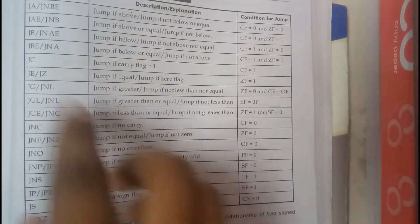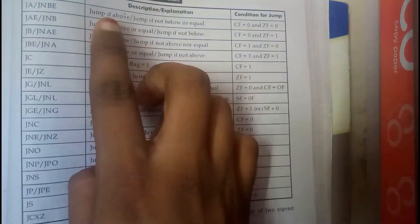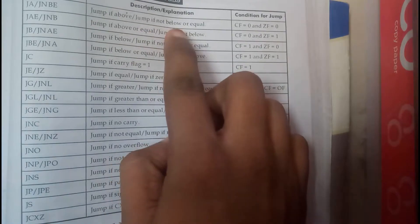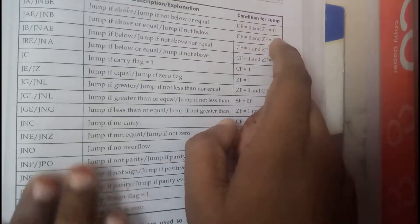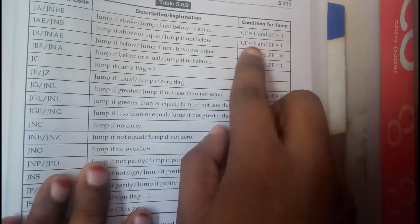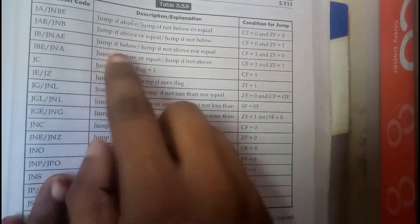Hello guys, I am back. So we have many kinds of jump conditions, like jump if above or jump if not below or equal, when CF is equal to 0 and ZF equal to 0. So in that situation it jumps. JAE which is above or equal, CF is equal to 0 and ZF equal to 0. Similarly, JB, jump if below,